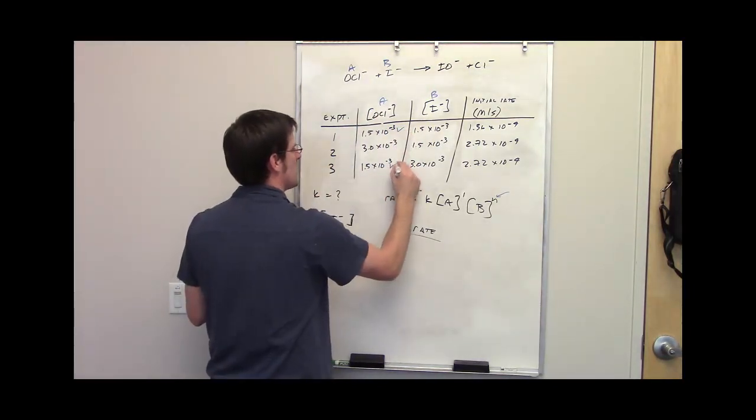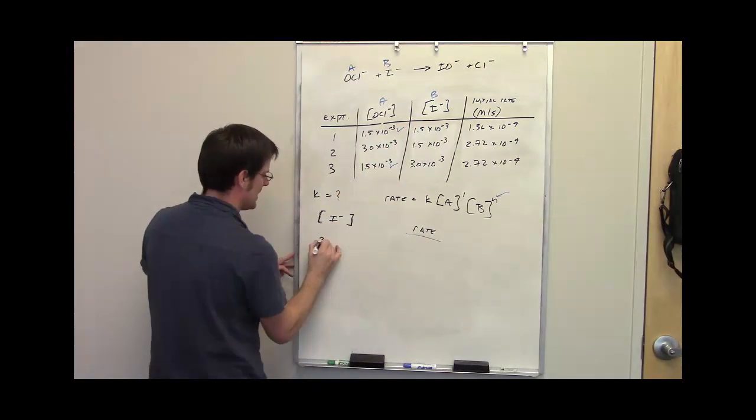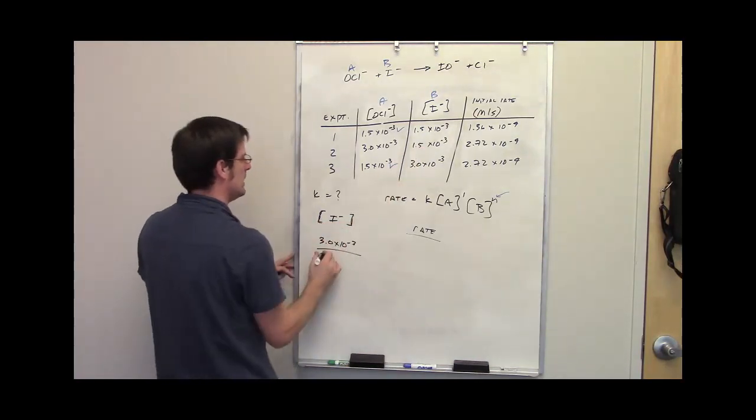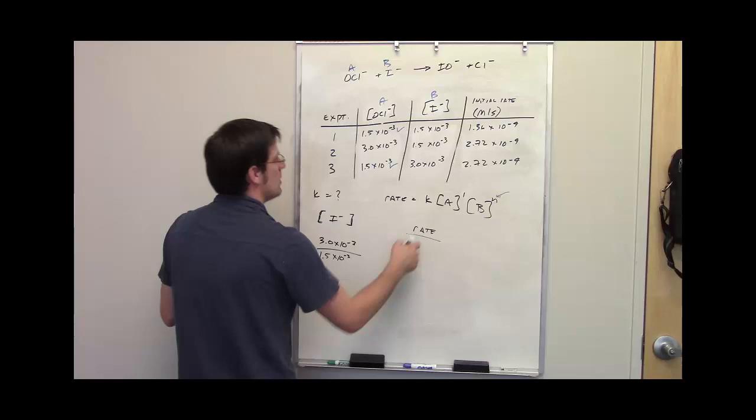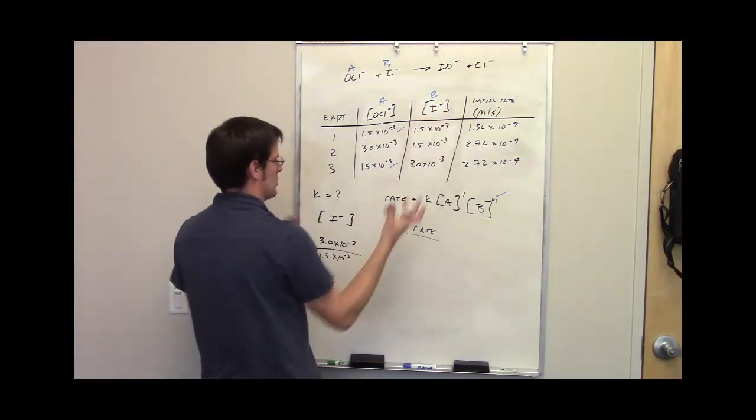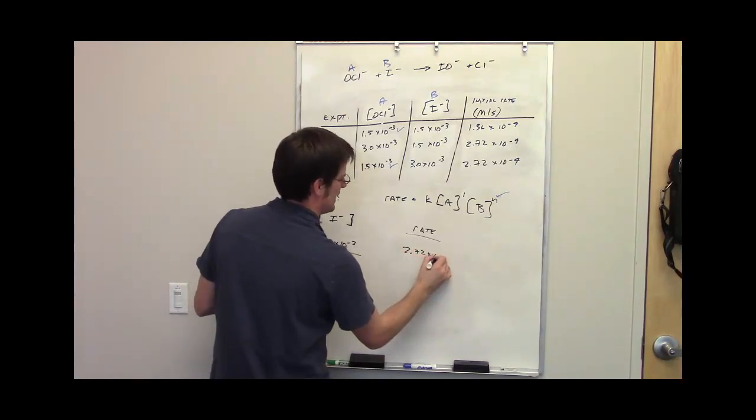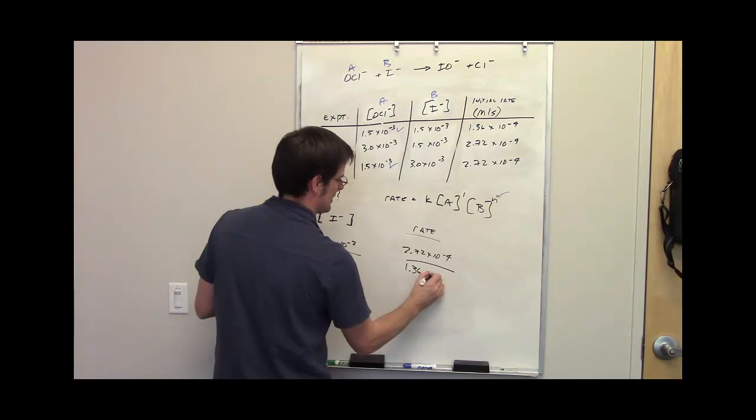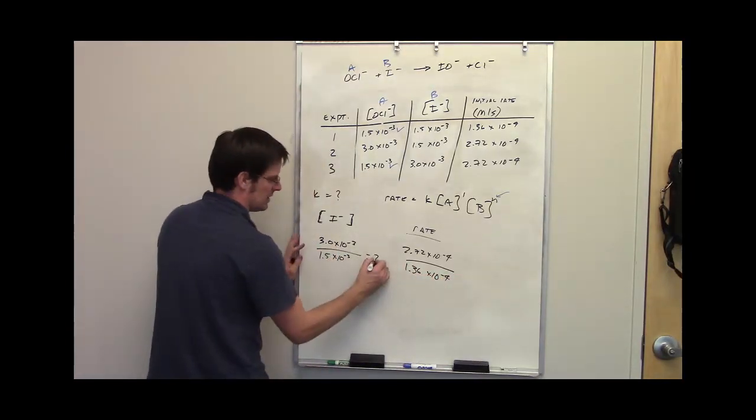That's experiments 1 and 3. In experiment 3, the iodide concentration was 3.0×10^-3. In experiment 1, it was decreased to 1.5×10^-3. So what were the rates? In experiment 3, the rate was 2.72×10^-4. In experiment 1, it was 1.36×10^-4. If I take this divided by that, it comes out to be 2.